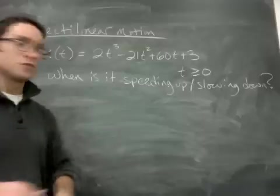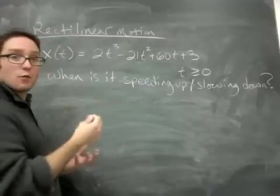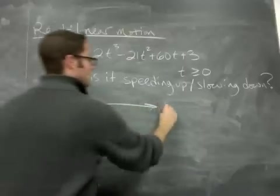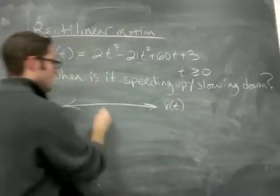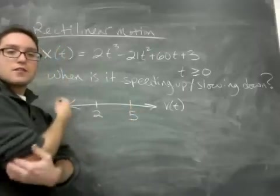So what I need to do is make a number line for velocity and acceleration and then compare the two and look at separate intervals. First I'm going to take velocity and set it equal to 0, which I just did. So this is the number line for velocity. And I'm going to put t equals 2 and t equals 5. That breaks it up into intervals.